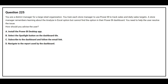Option A: Install the Power BI desktop app. Option B: Select the spotlight button on the dashboard tile. Option C: Subscribe to the dashboard and follow the email link. Option D: Navigate to the report used by the dashboard.